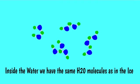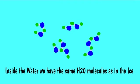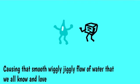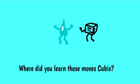Inside the water, we have the same H2O molecules as in the ice. But the water molecules in temperatures above 0 and below 100 degrees Celsius will lose bonds with each other, causing that smooth, wiggly, jiggly flow of water that we all know and love. Where did you learn those moves, Cubix?